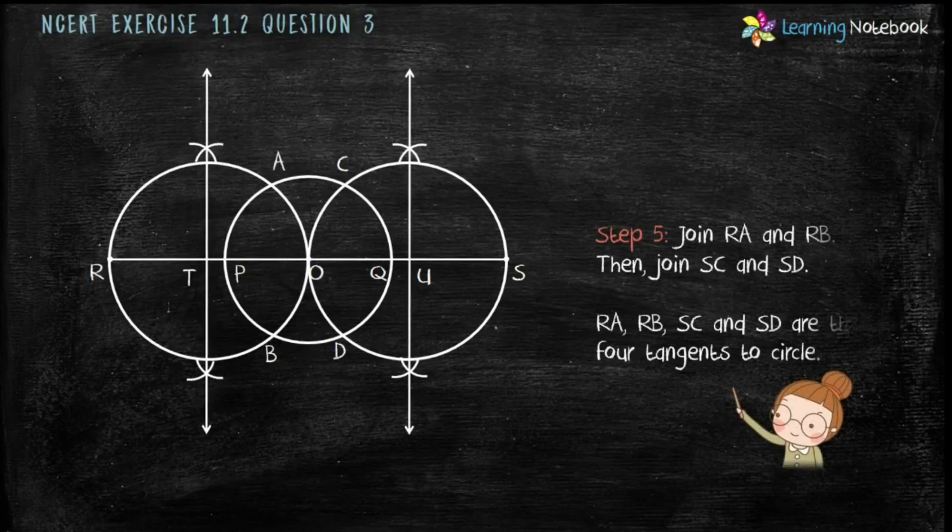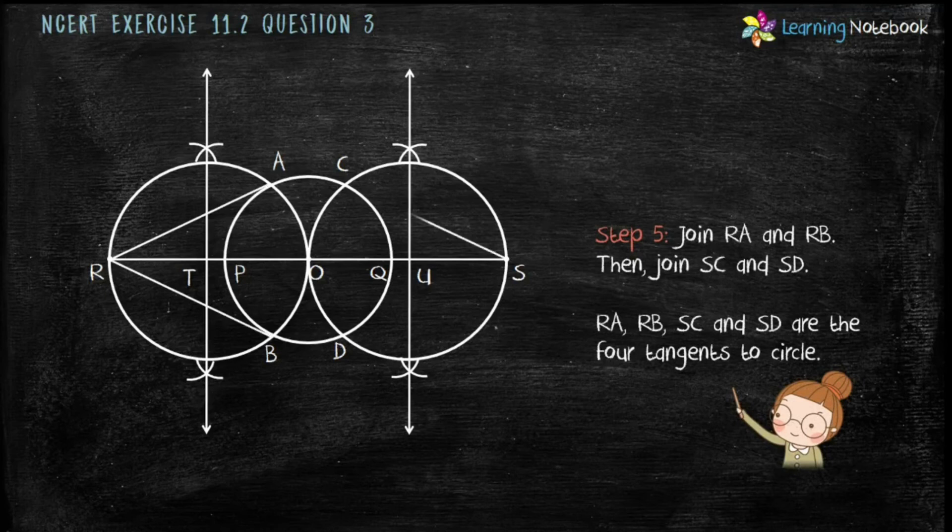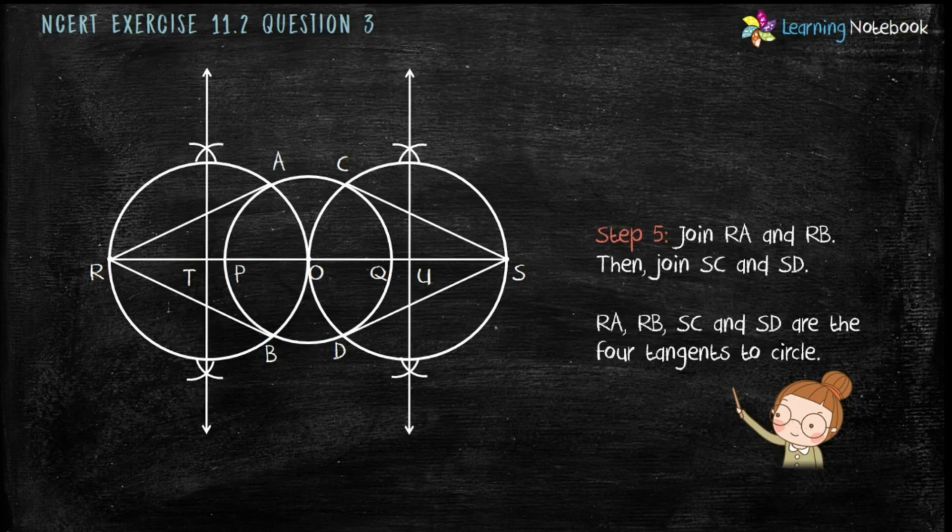Now, in the end, step 5 is join RA and RB, then join SC and SD. RA, RB, SC and SD are the four tangents to the circle.